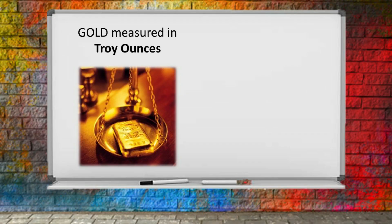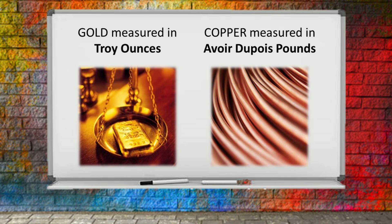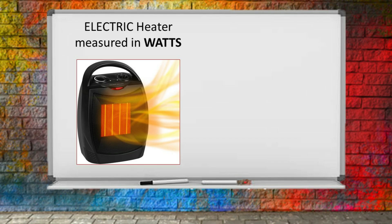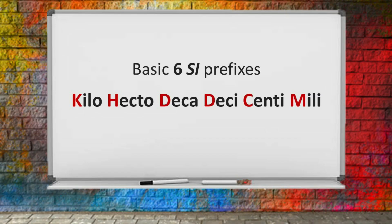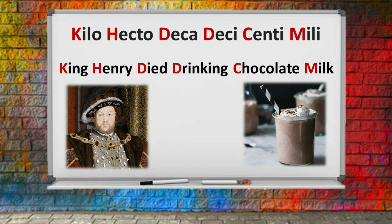Now let's talk about SI prefixes. The International System of Units — SI — is the simplified modern version of the metric system. SI's greatest advantage is that it has only one unit for each type of measurement, so it's never necessary to convert from one unit to another within the system. The basic six SI prefixes are kilo, hecto, deca, deci, centi, and milli. You can use the phrase "King Henry died drinking chocolate milk."